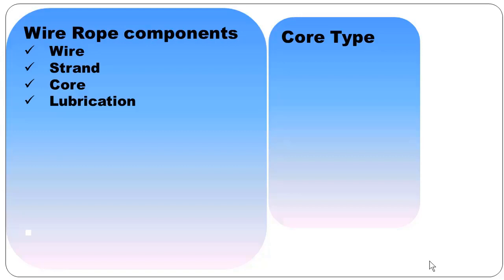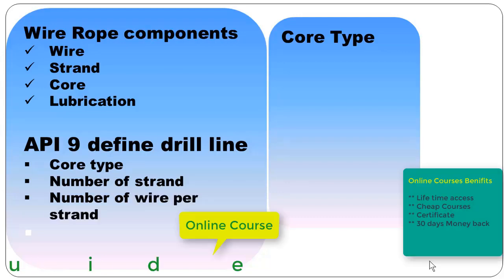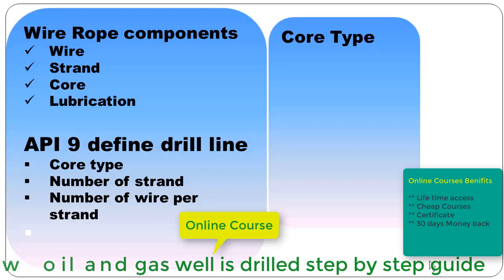As per API 9, we can define drilling line by core type, number of strands, and number of wires per strand. Core type: there are two types of core that can be used in a wire rope.